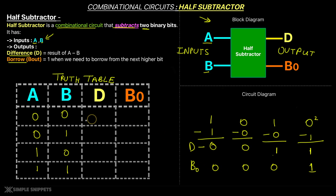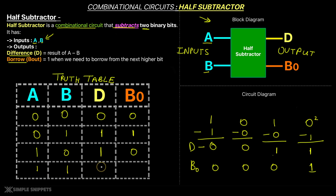Now that we understand this basic operation, we can easily fill out the truth table. We have 4 combinations. The difference D is A minus B: 0 minus 0 gives difference 0 and borrow 0; 0 minus 1 — A is smaller, B is greater — we take an imaginary borrow, so this 0 becomes 2, and 2 minus 1 gives a difference of 1, and the borrow is also 1; 1 minus 0 gives difference 1 and borrow 0; 1 minus 1 gives difference 0 and borrow 0. This is the complete truth table for the half subtractor.